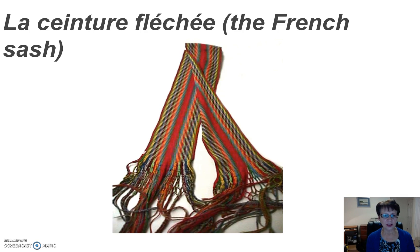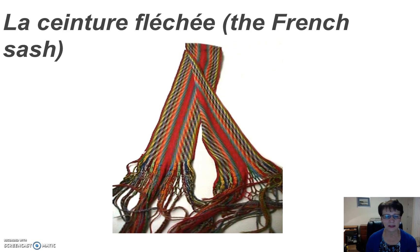The center fleche, or French sash, or arrow sash, is another historical and cultural symbol in French Canada. It was a practical as well as a fashionable accessory, and usually the sash is long enough to pass around the waist twice.